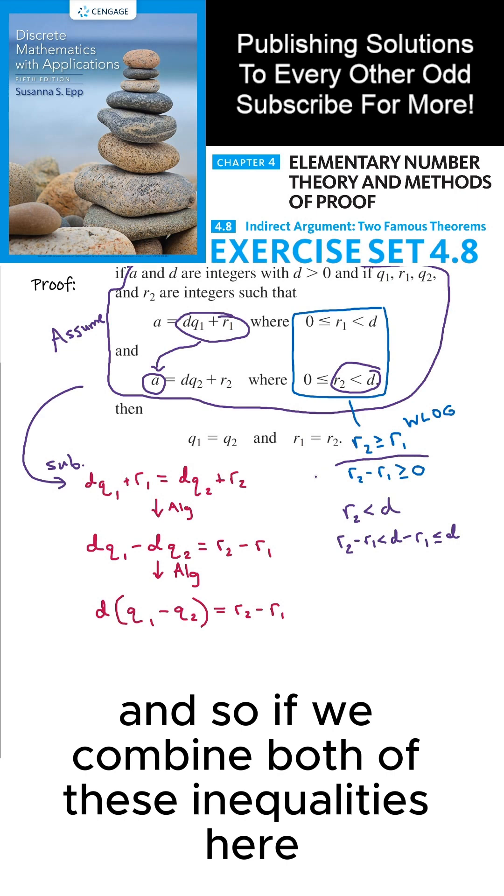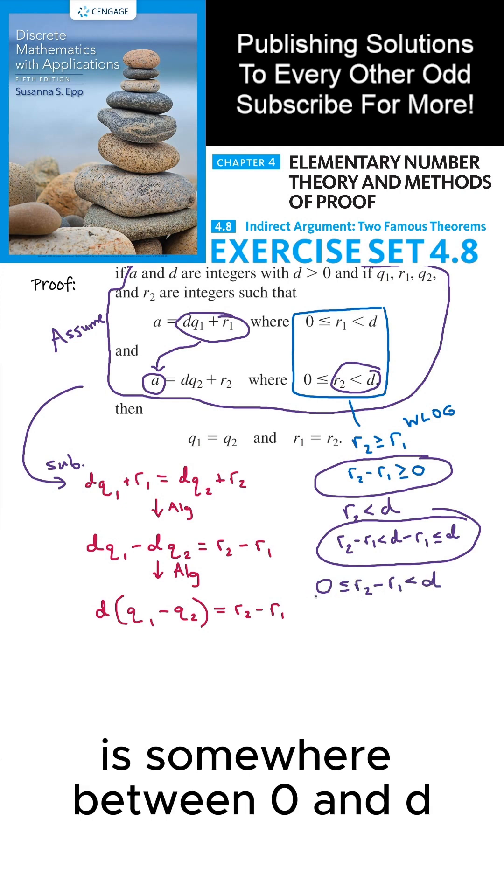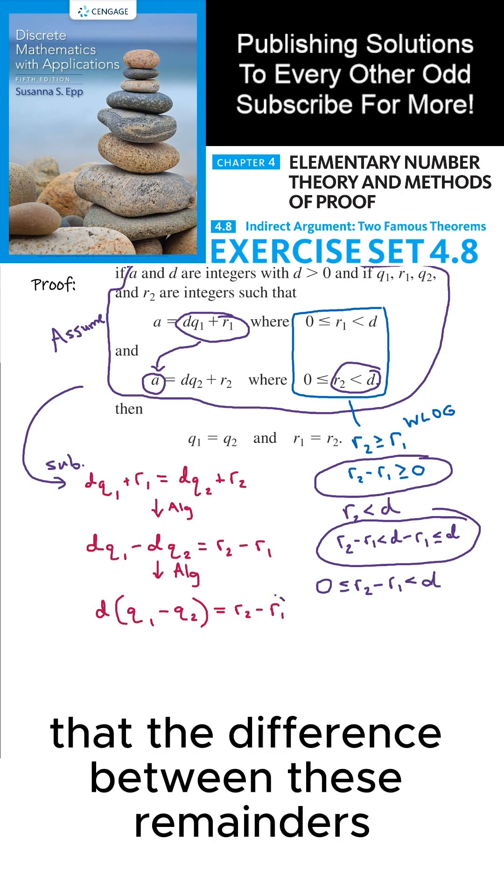And so if we combine both of these inequalities here, we can sandwich this difference. The difference of the remainders is somewhere between zero and D.